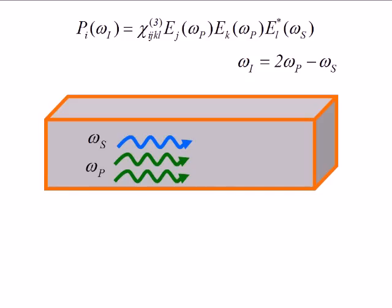What happens is I'm mixing two fields at ωp, my pump, with the complex conjugate of a field at my signal frequency. If you count up the frequencies, that gives me a polarization oscillating at the idler frequency, ωi = 2ωp - ωs.